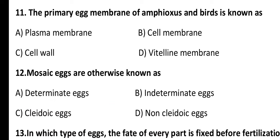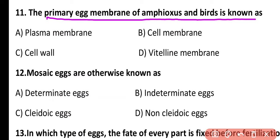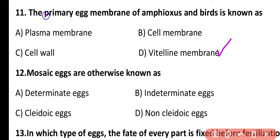Question 11. The primary egg membrane of amphioxus and birds is known as plasma membrane, cell membrane, cell wall, or vitelline membrane? The correct answer is option D. The primary egg membrane of amphioxus and birds is known as the vitelline membrane.